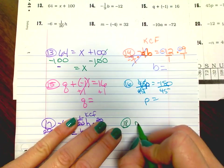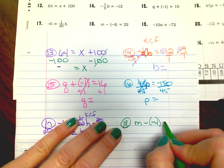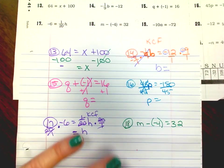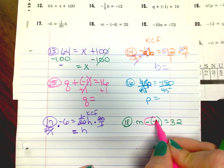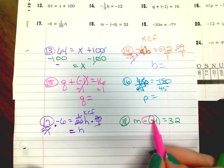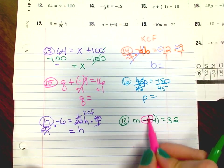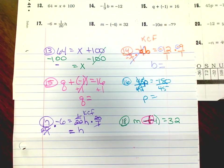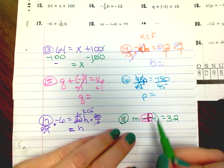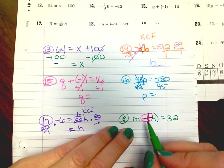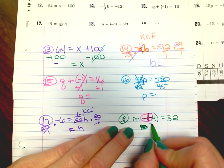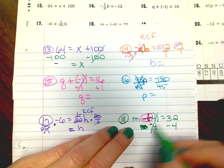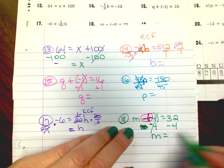Number 18. M minus a negative 4 equals 32. Remember your double negatives — when they're like this, they become a positive. So when I want to get rid of 4 to leave m by itself, if it's a positive 4 now, I'm going to subtract 4 from both sides. This cancels out, and m equals the answer.